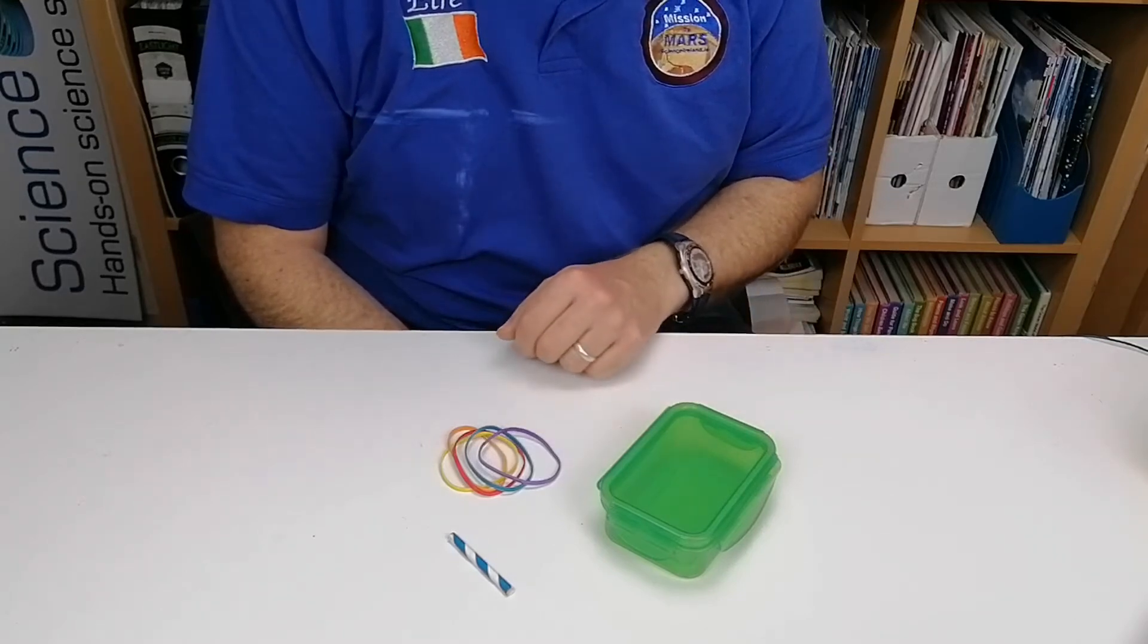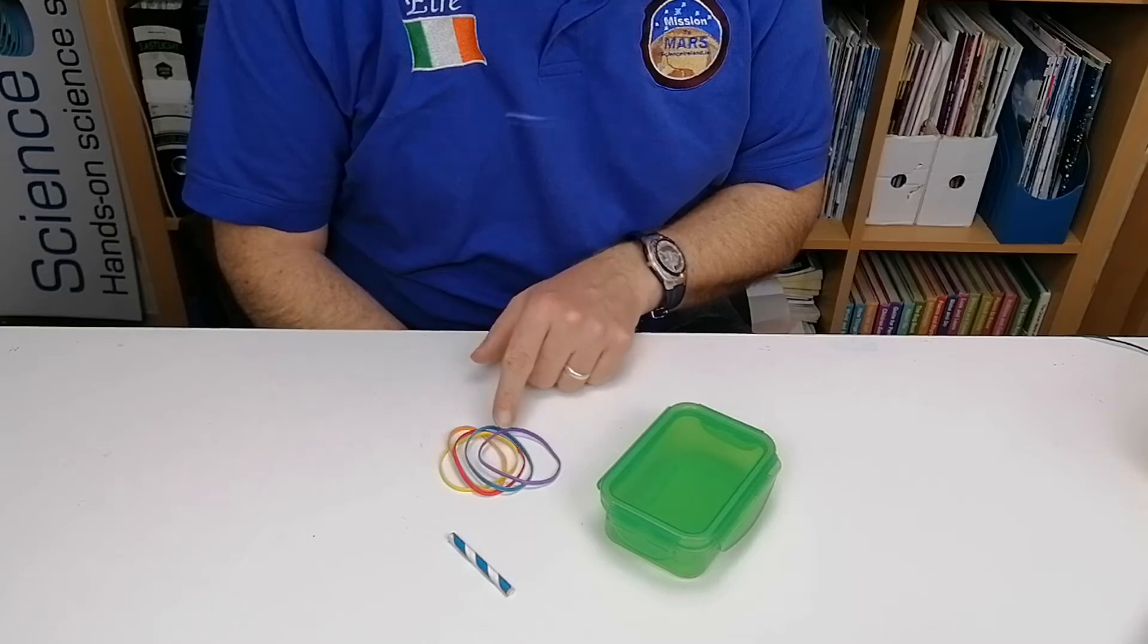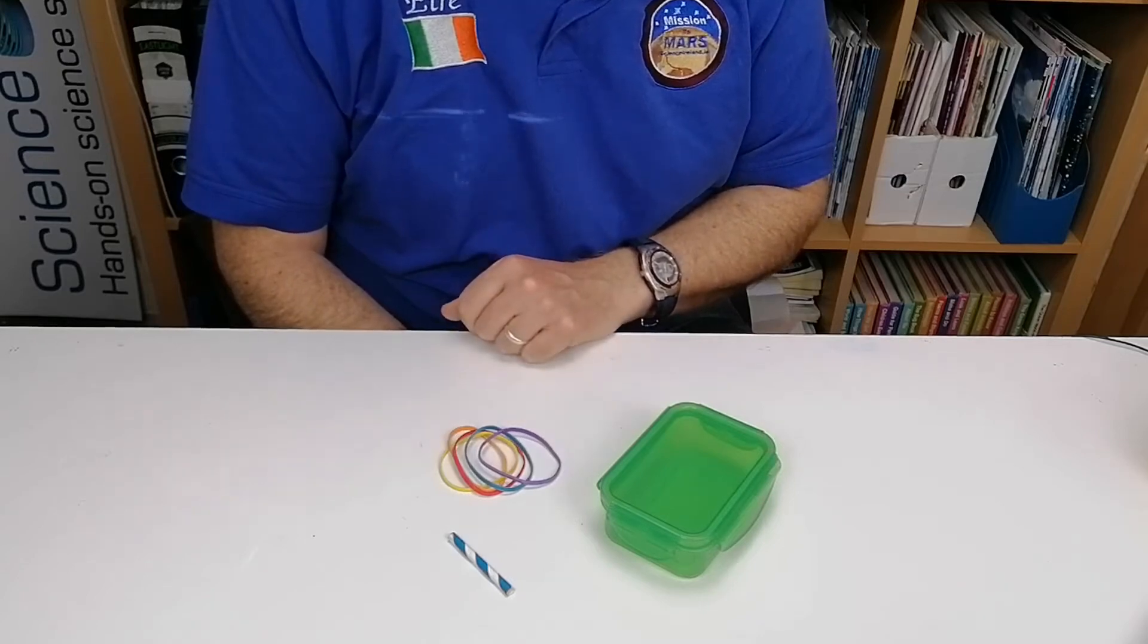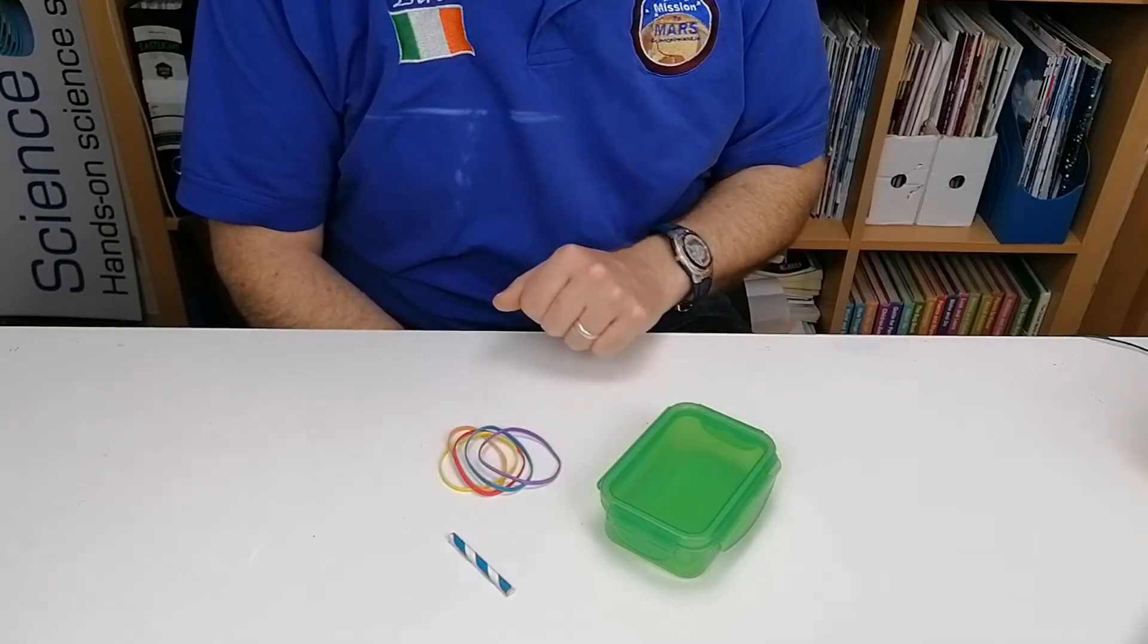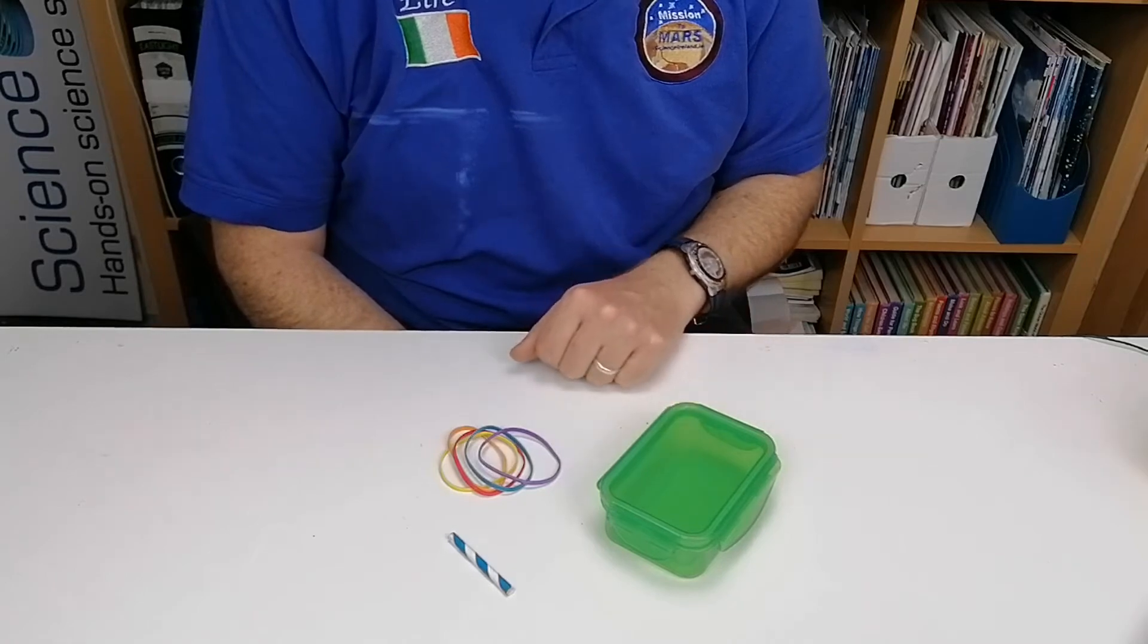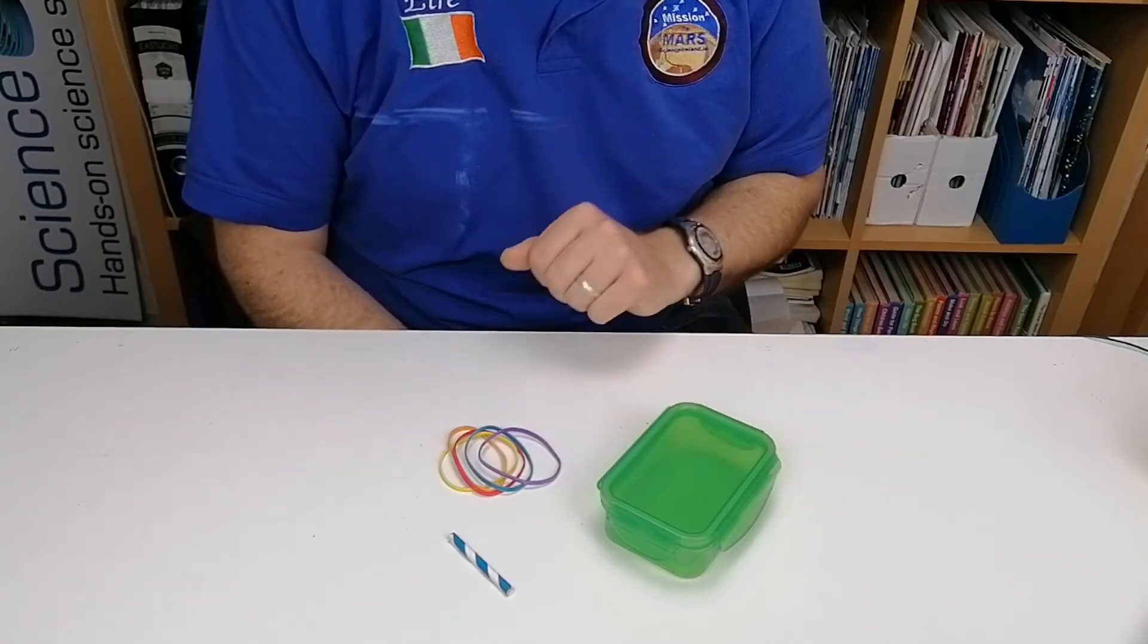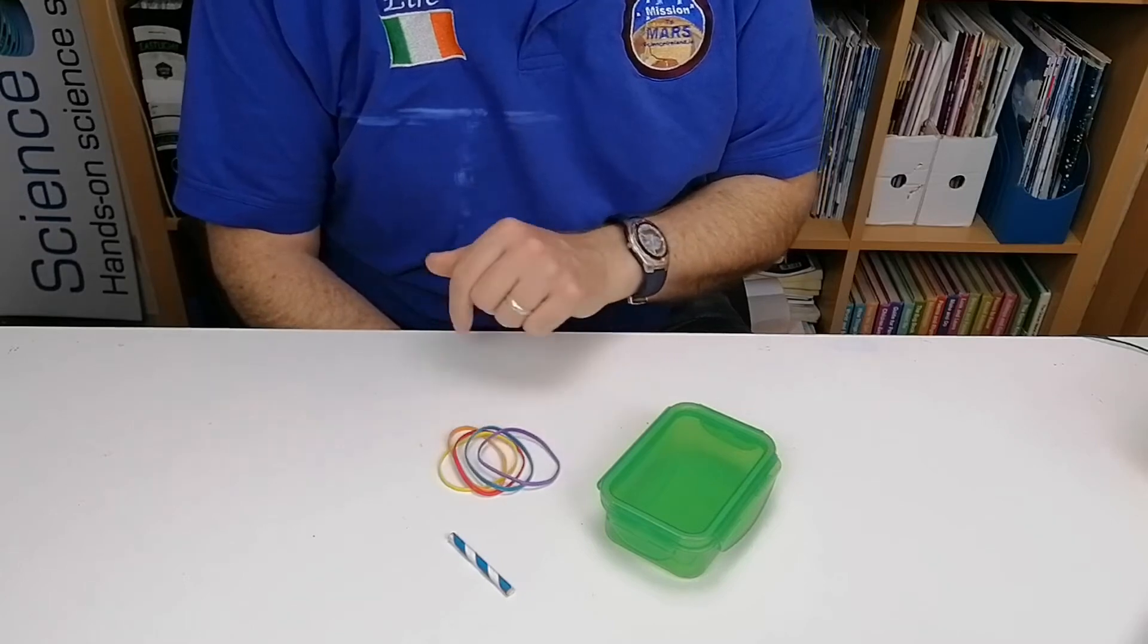Now to do this we're going to simulate that. We're going to try and make you hear those sort of sounds. Instead of having muscles, in this case we're going to use elastic bands. We're going to blow air through a little straw and then we're going to use a box as the container just to hold the elastic bands.